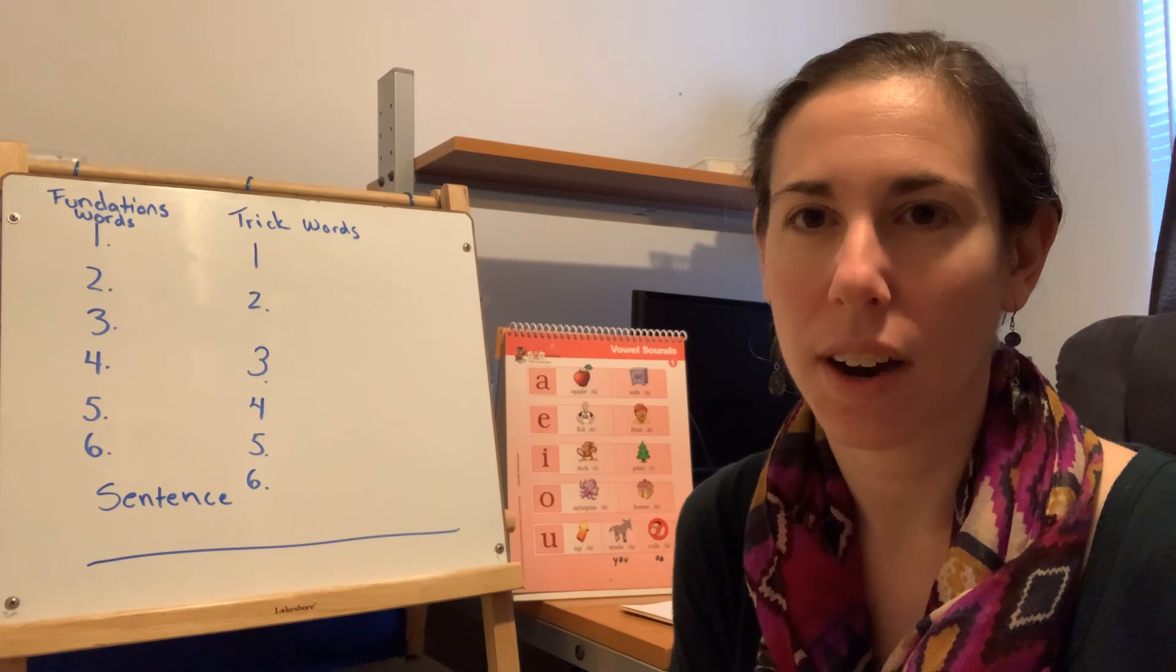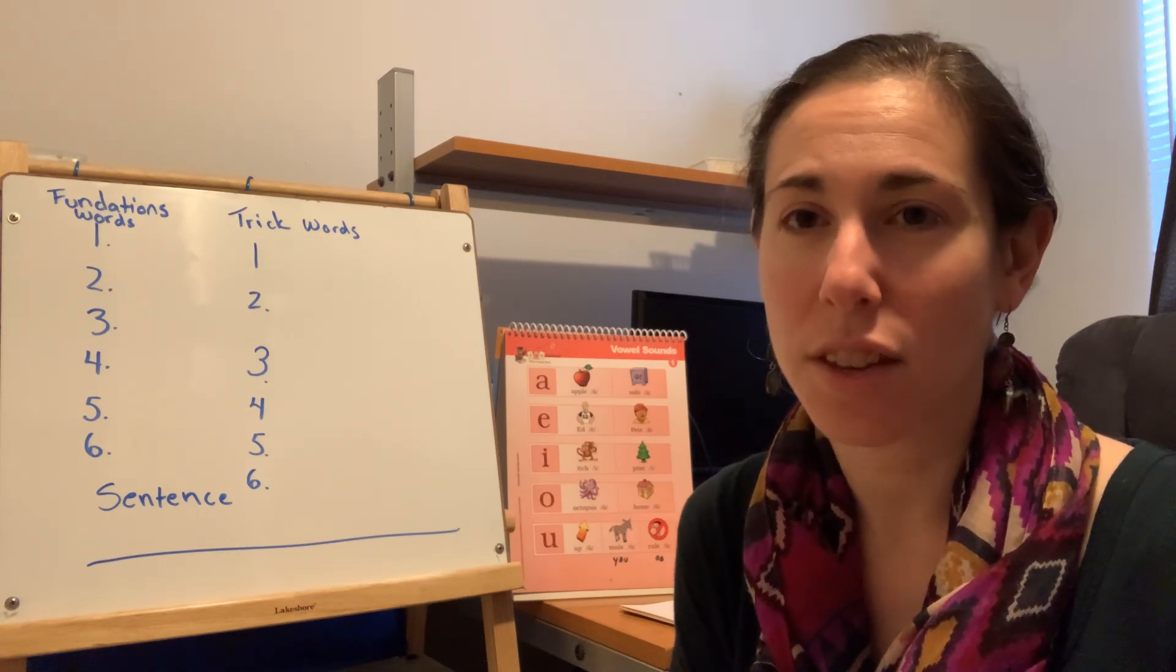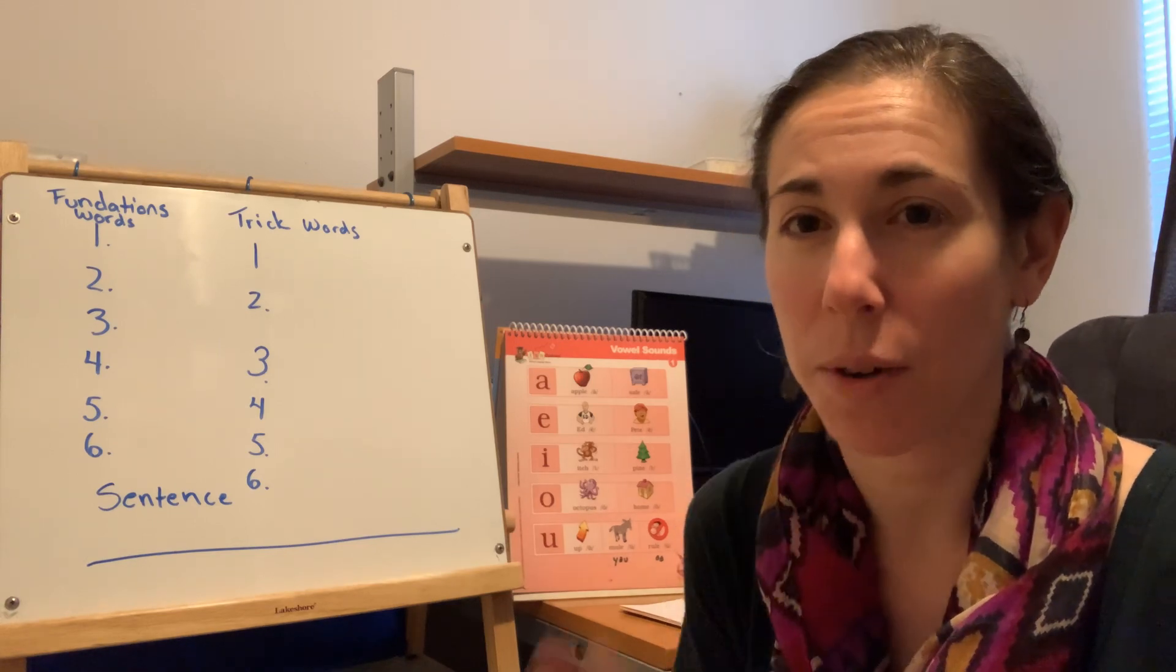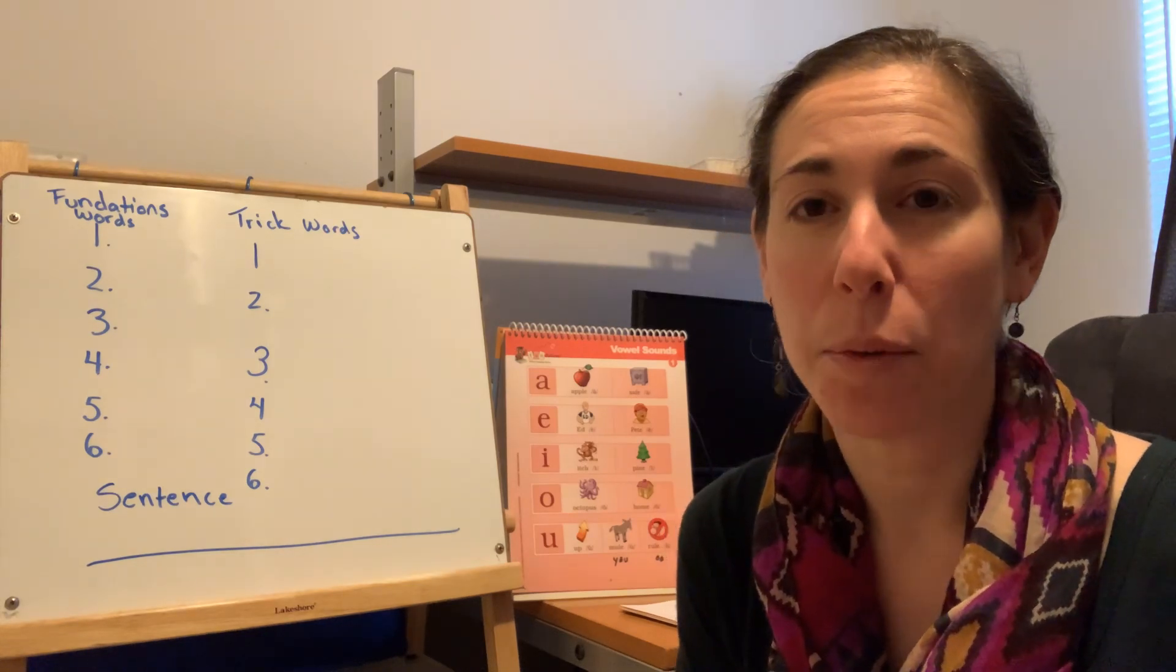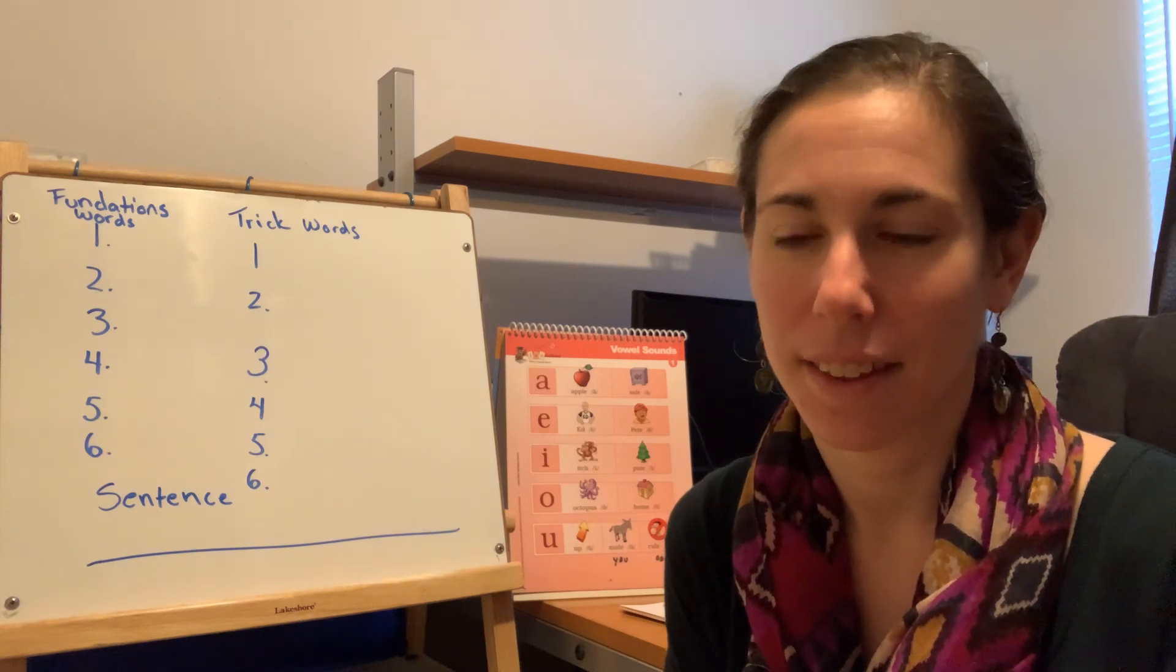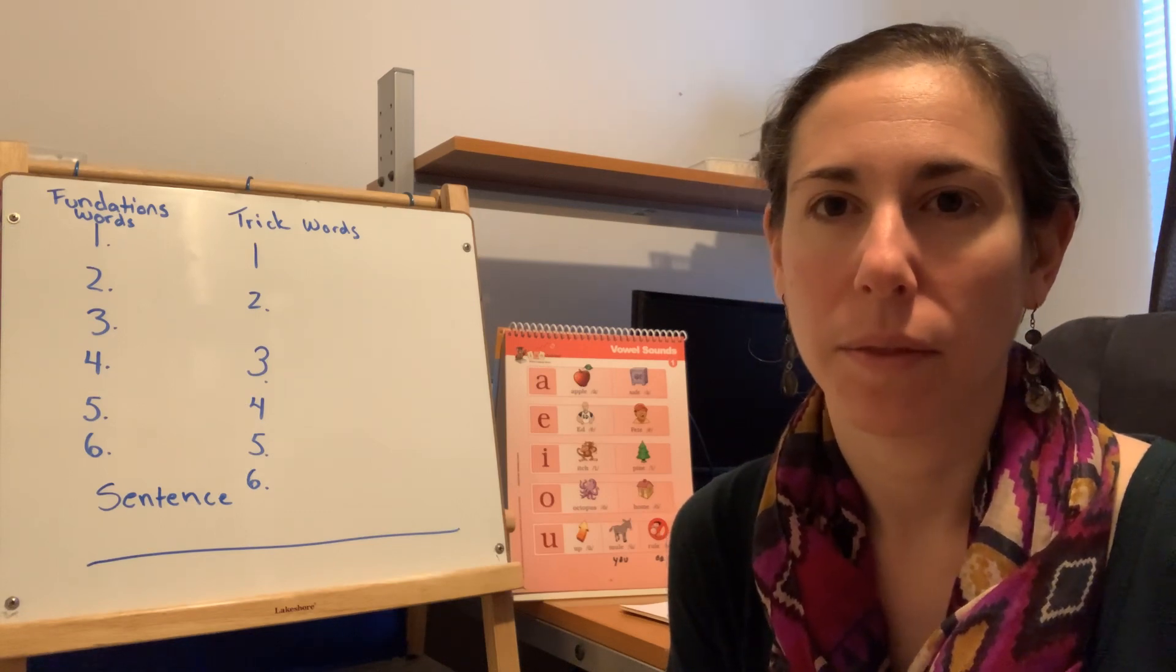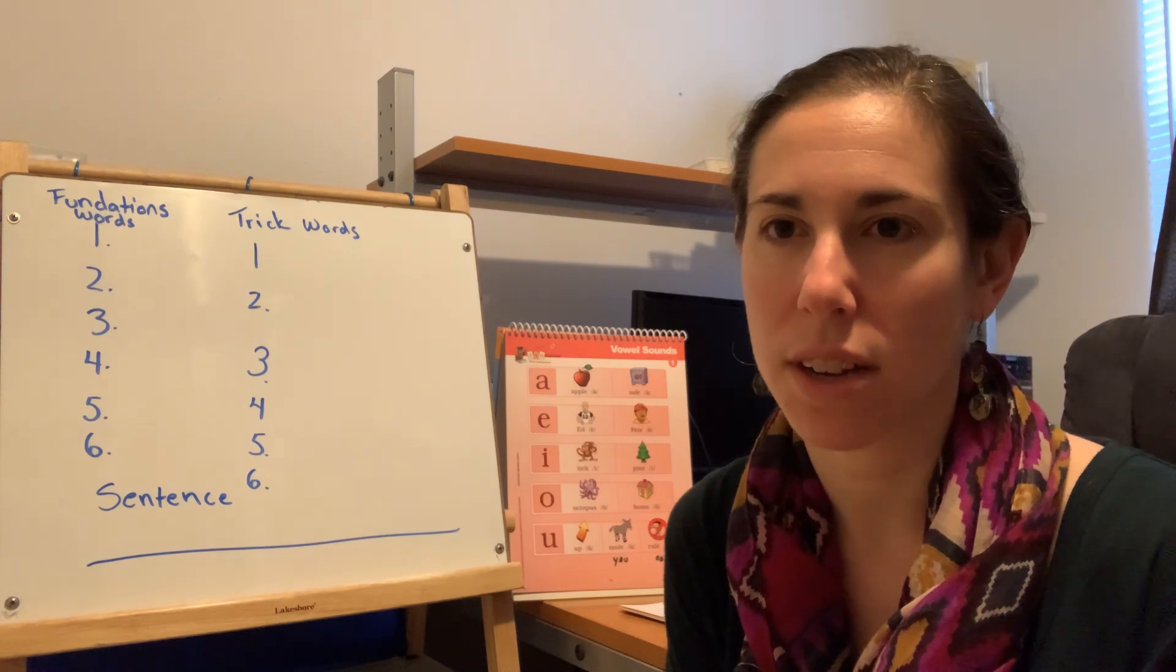Number four, just. I just want ice cream. Just. Even though it's a trick word, you can tap it out. Make. I will make some bread. Make. And number six, before. Look both ways before you cross the street. Before.